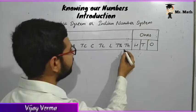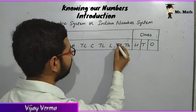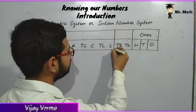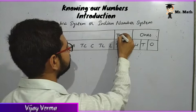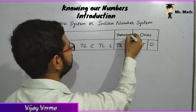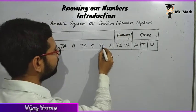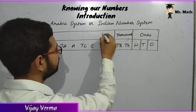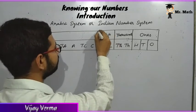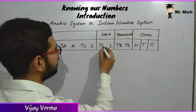The second period is thousands, with place values: thousand and ten thousand. The third period is lakh, with two place values: lakh and ten lakh.